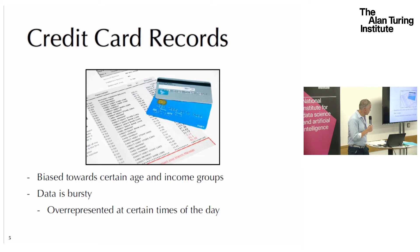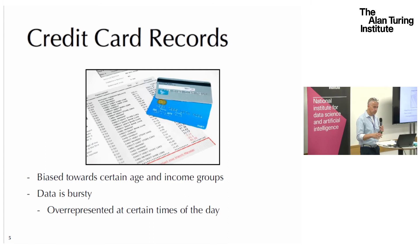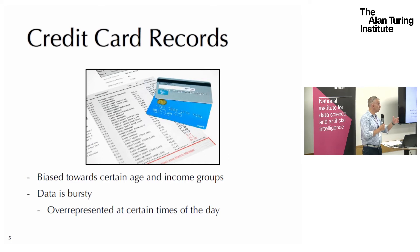Another kind of dataset is credit card records. These are very biased towards people who have high income, but we can infer location because we know where they purchase things. There is also the issue of data being bursty — you don't buy things during work time most of the time, so we don't know where you are then.